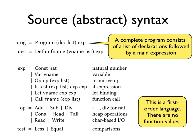The source AST is straightforward. A program consists of a list of function declarations followed by a main expression. It is worth noting that this language lacks function values. Each function call must be to a concrete function name.